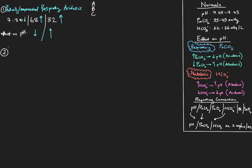Example number two: pH is 7.58, CO2 is 17, and bicarb is 16. Looking at the effect on pH — we can see immediately that this pH is abnormal, outside normal range on the alkalotic side. So we have an alkalosis.